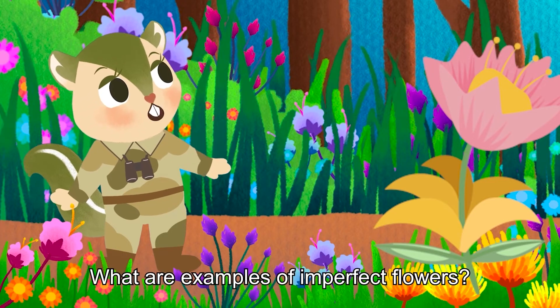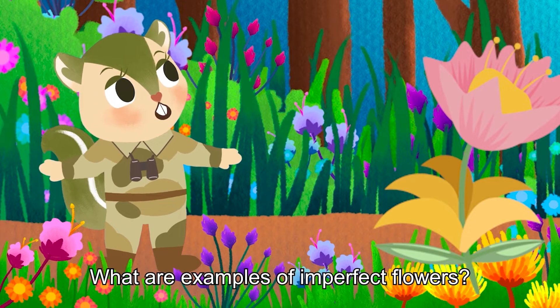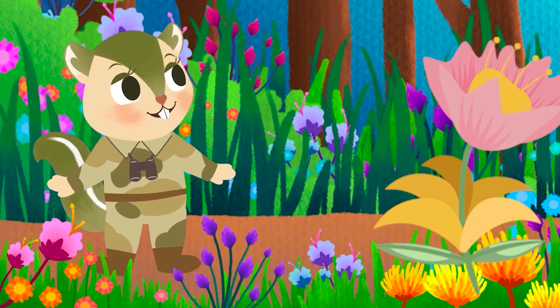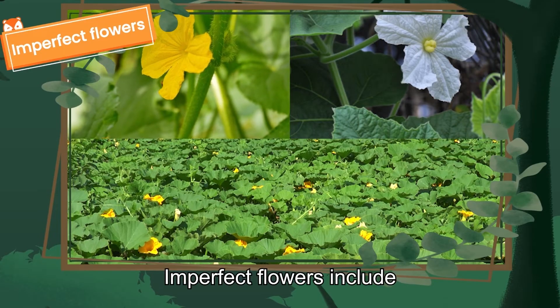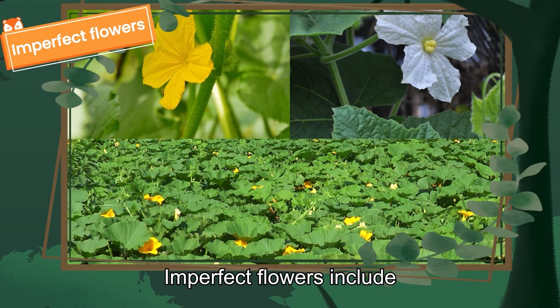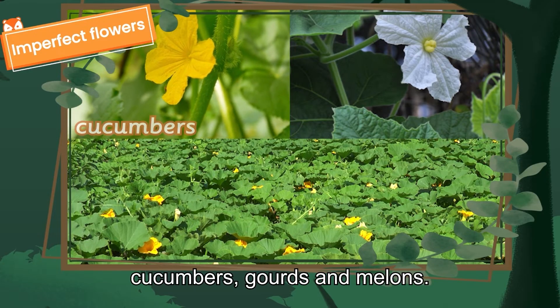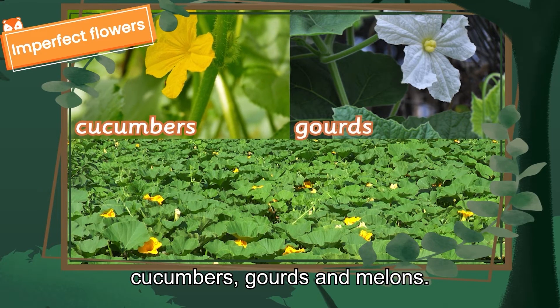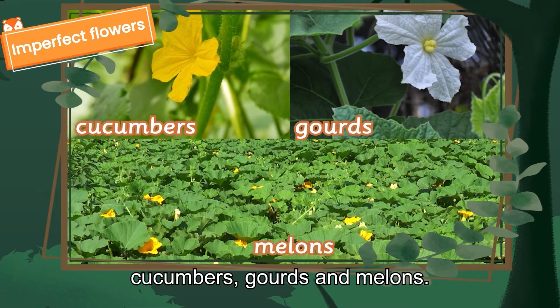What are the examples of imperfect flowers? Imperfect flowers include cucumbers, gourds, and melons.